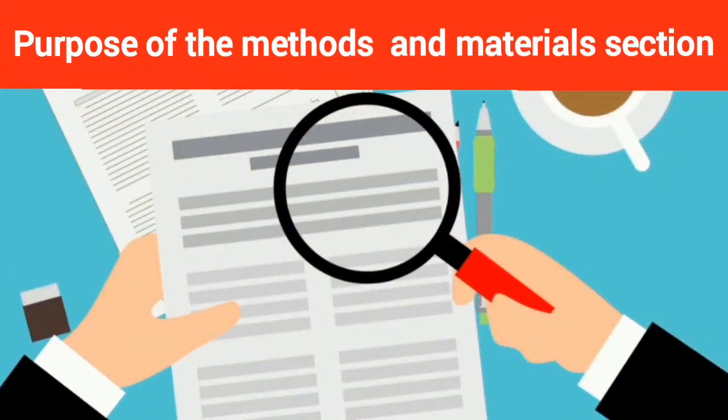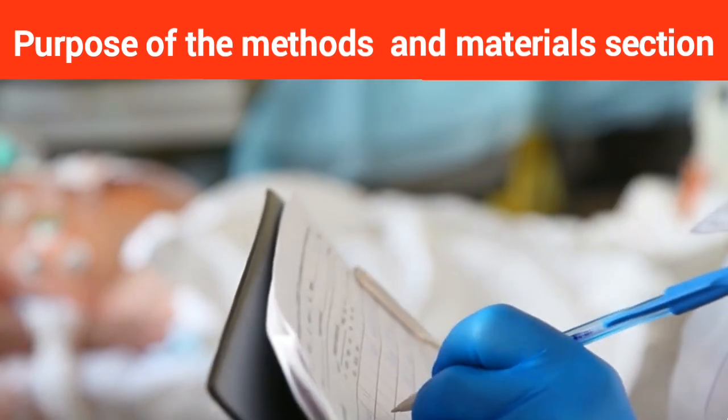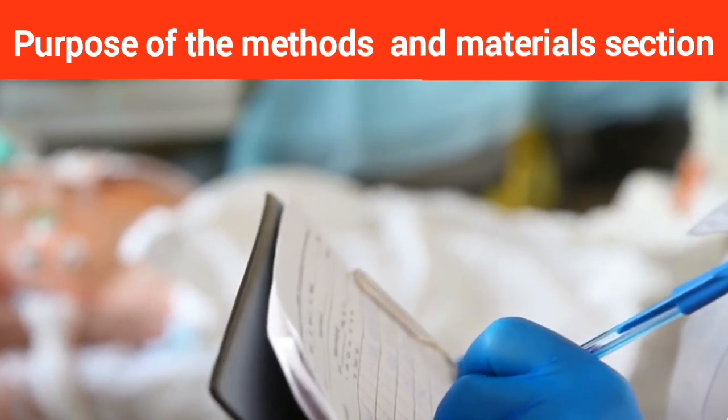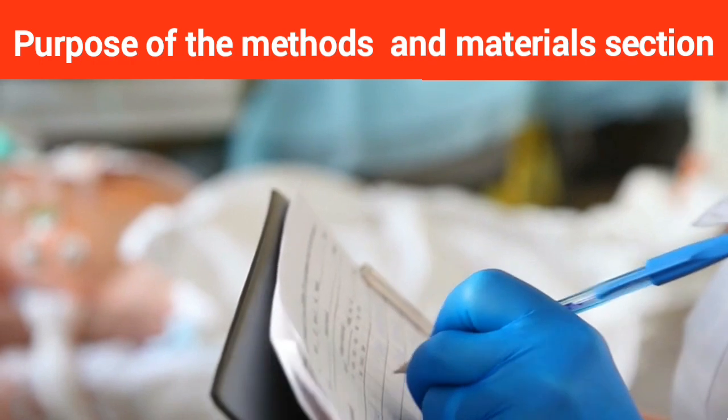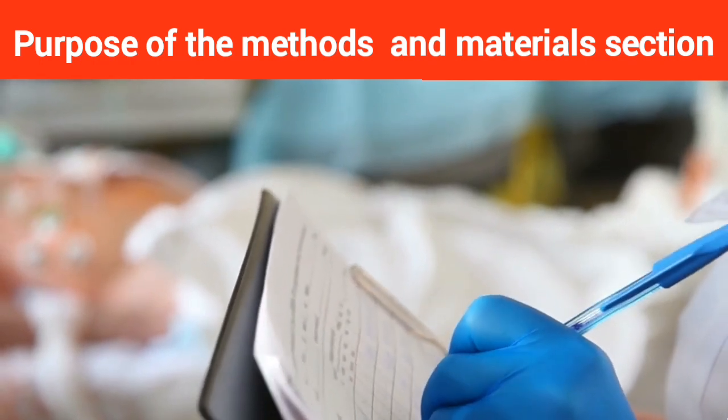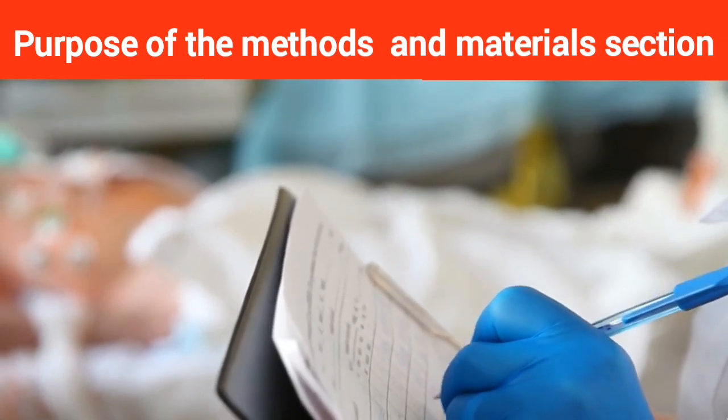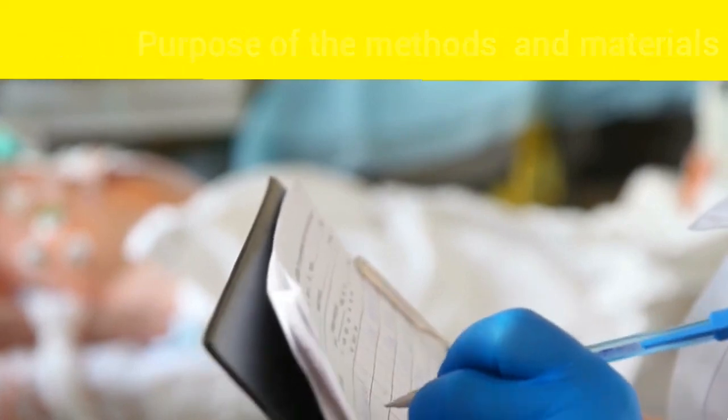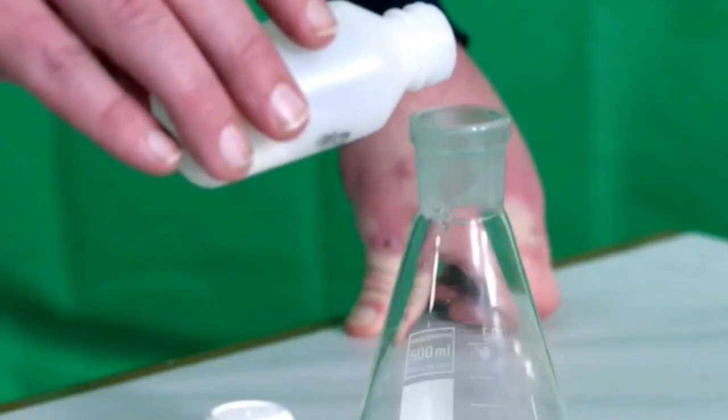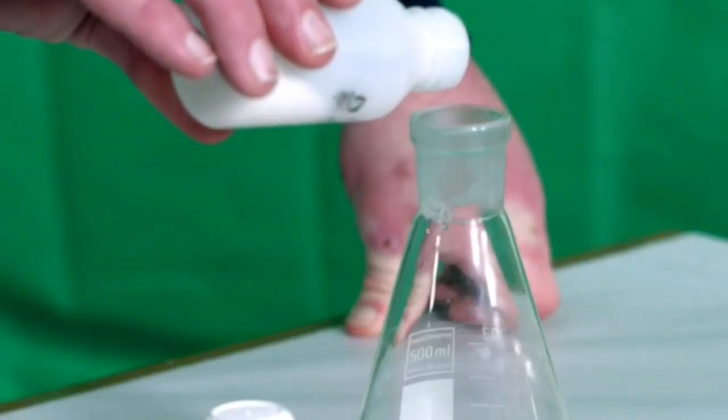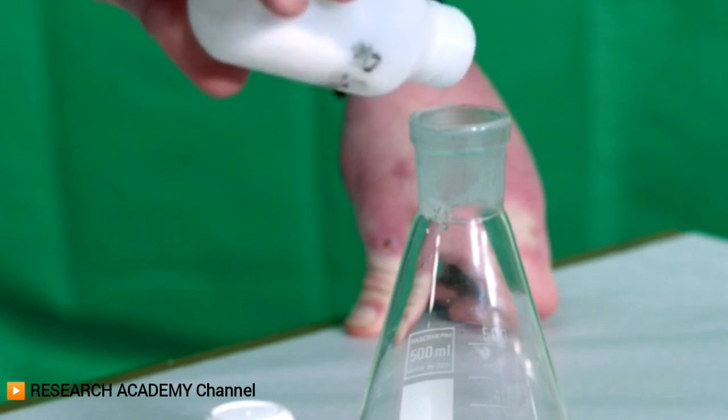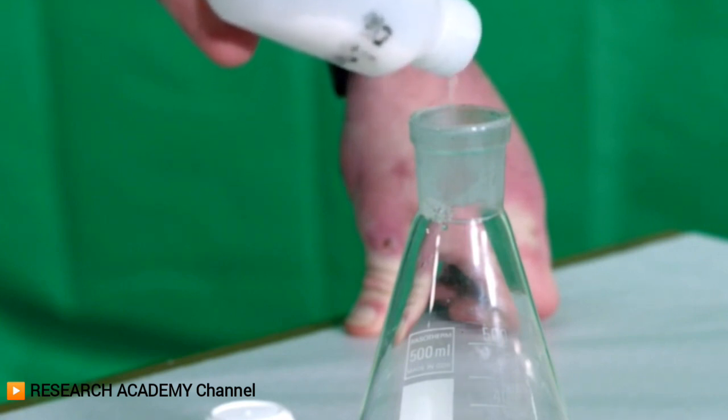Any reviewer of your article will focus well on this section to ensure that your experiments are repeatable over and over, and lead to the same results. In the event that he doubts the reproducibility of your experiment, or believes that you have hidden accurate details to prevent others from repeating what you have done to reach what you have reached, he will reject your article without hesitation. Because it will not be considered a solid research.